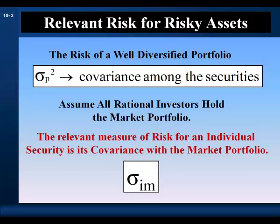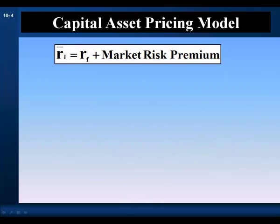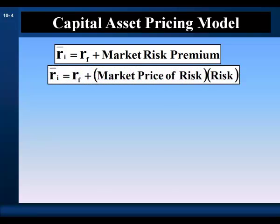Now we know the proper measure of risk for a risky asset. Now let's develop our pricing model. Our basic pricing model says the expected return for risky asset I is equal to the risk-free rate plus a market risk premium for asset I.